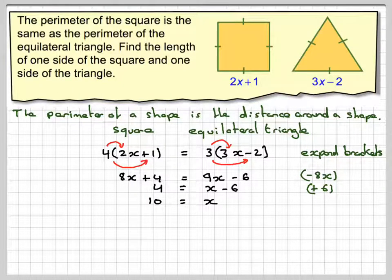So in order to find the length of one side, we need to substitute that value back in for the square and for the triangle.